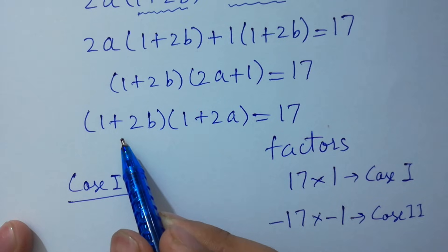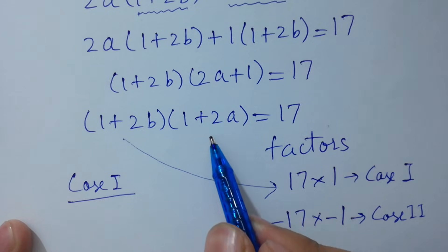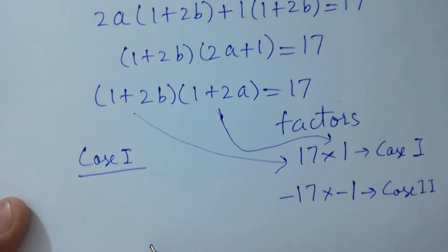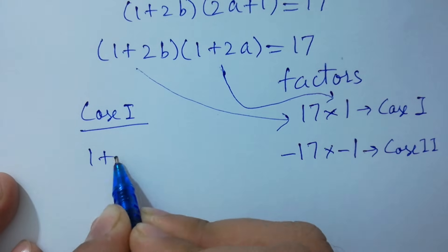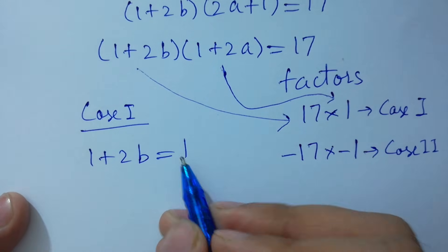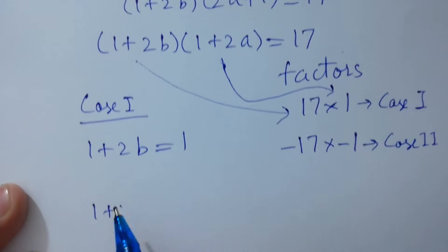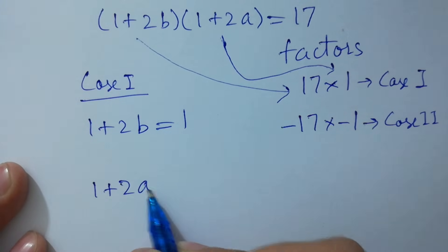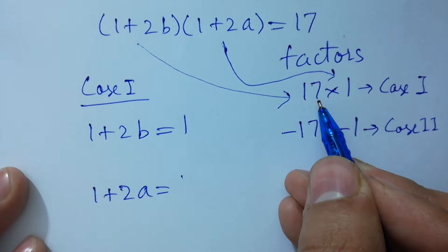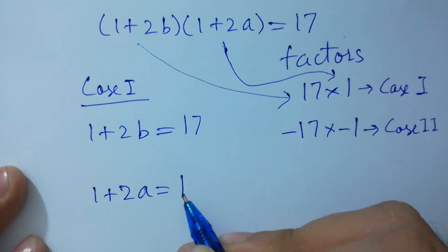So we have factors: (1 plus 2b)(1 plus 2a) equals 17. First case: 1 plus 2b equals 17 and 1 plus 2a equals 1. Second case: 1 plus 2b equals 1 and 1 plus 2a equals 17.